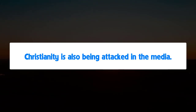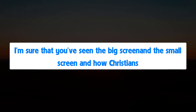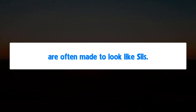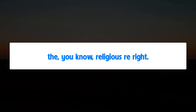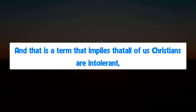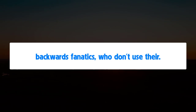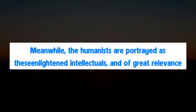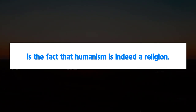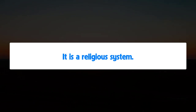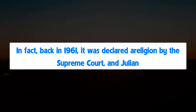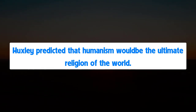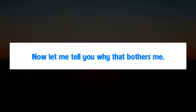Christianity is also being attacked in the media. On the big screen and small screen, Christians are often made to look like imbeciles. On news programs, Christians are often referred to as the 'religious right,' implying that all Christians are intolerant, backwoods fanatics who don't use their brains. Meanwhile, humanists are portrayed as enlightened intellectuals. Of great relevance is the fact that humanism is indeed a religion. Back in 1961 it was declared a religion by the Supreme Court. Julian Huxley predicted that humanism would be the ultimate religion of the world.